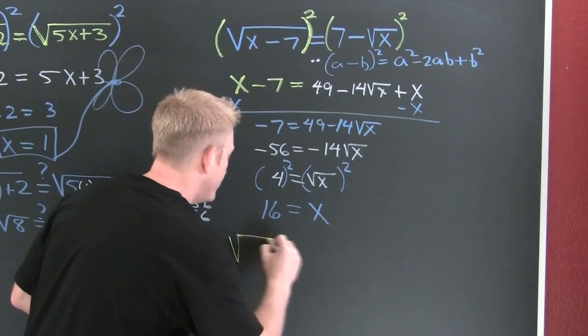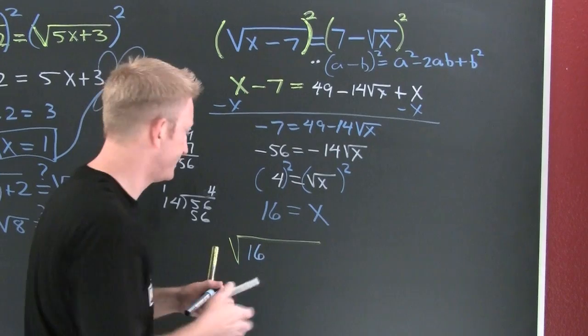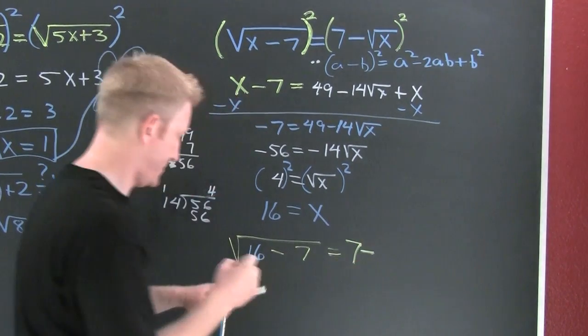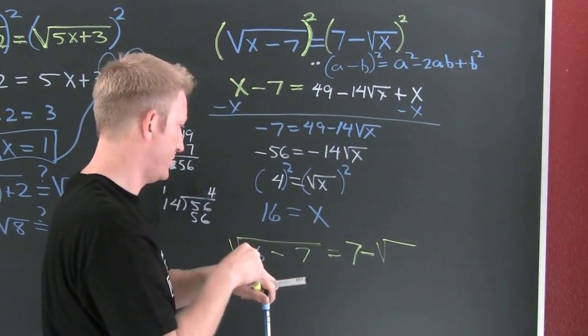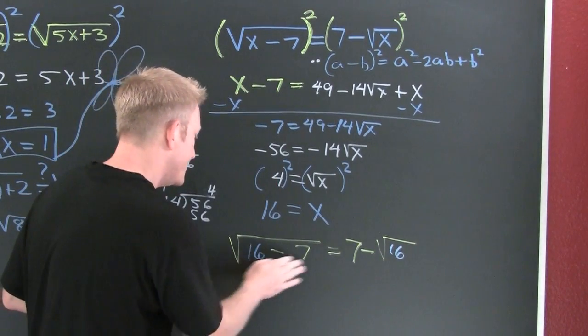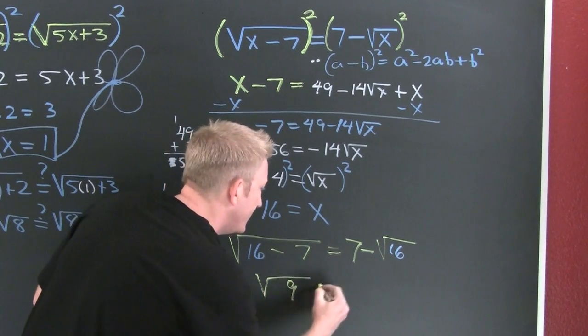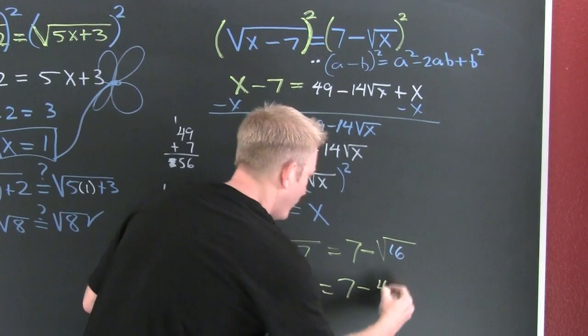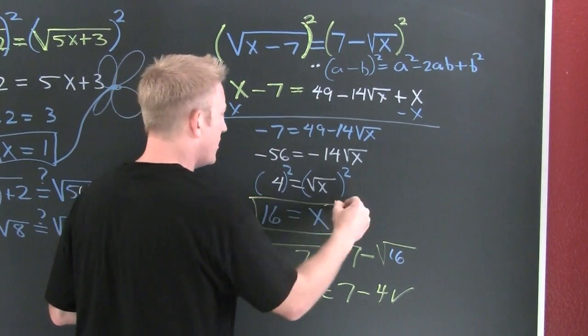Is the square root of 16 minus 7 equal to 7 minus the square root of 16? Let's clean it up: 16 minus 7, that's 9. Is the square root of 9 equal to 7 minus 4? Yes, 16 you are a solution.